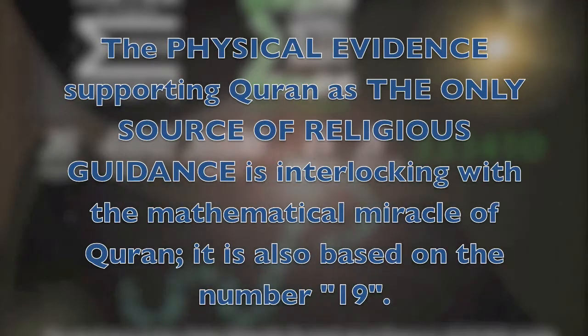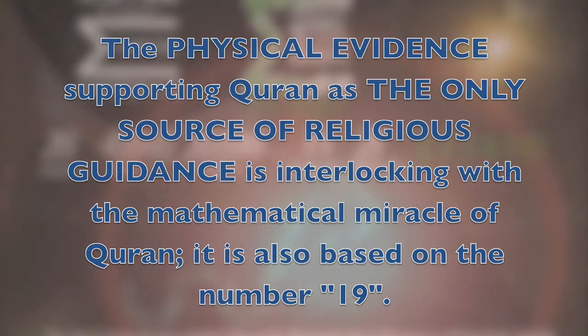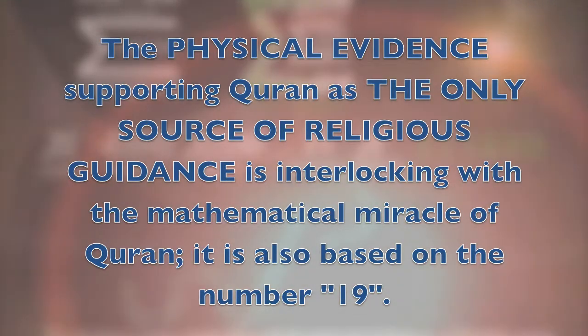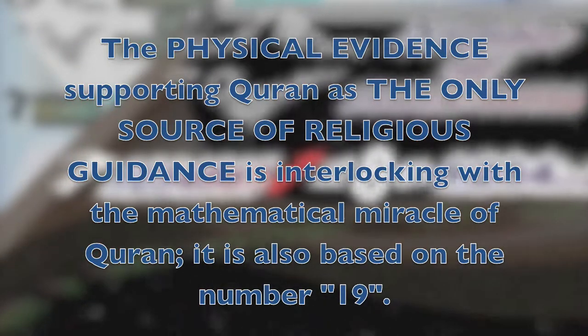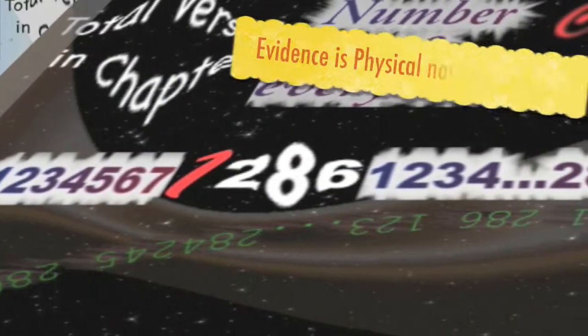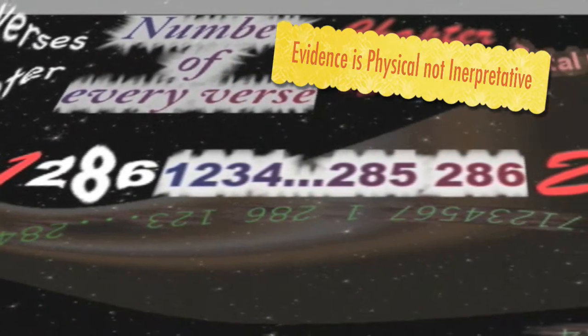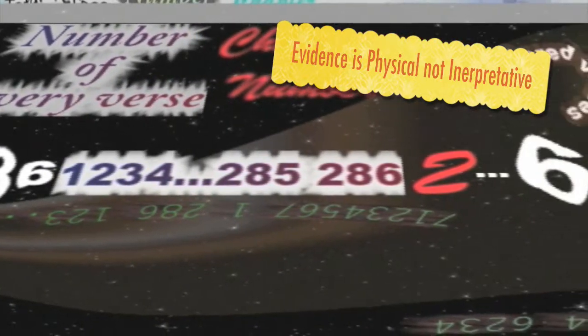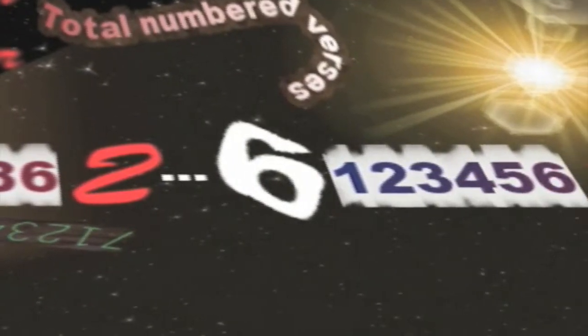The physical evidence supporting Quran is the only source of religious guidance is interlocking with the mathematical miracle of Quran. It is also based on number 19. Such evidence is presented on pages 64-72. Since the evidence is purely physical, rather than interpretive, all free-thinking people will accept it. Only those hopelessly trapped in false convictions will fail to see the clear truth, due to the curse of rejecting Quran.